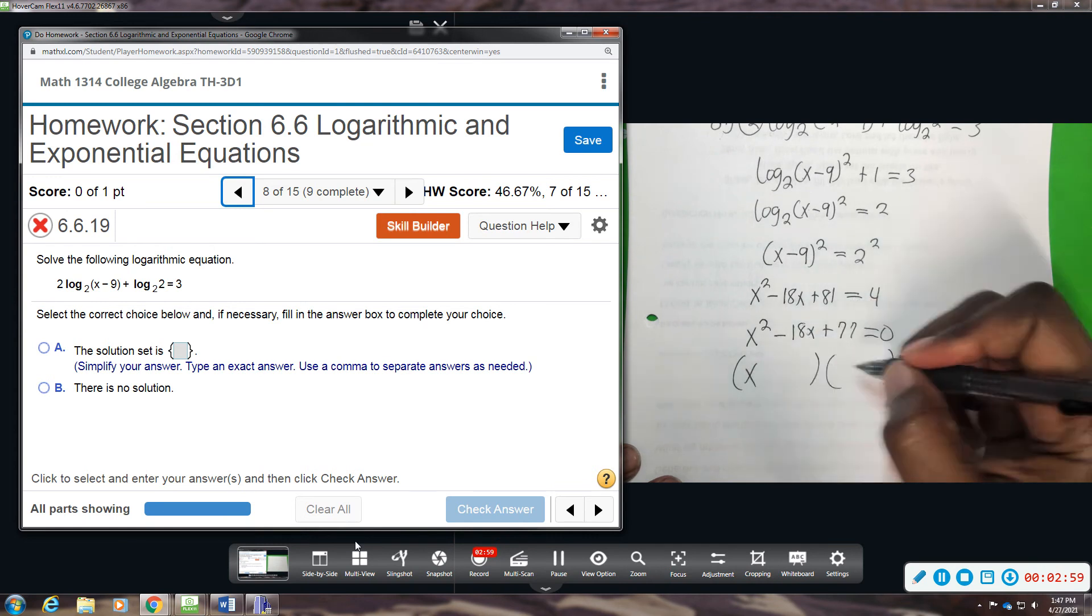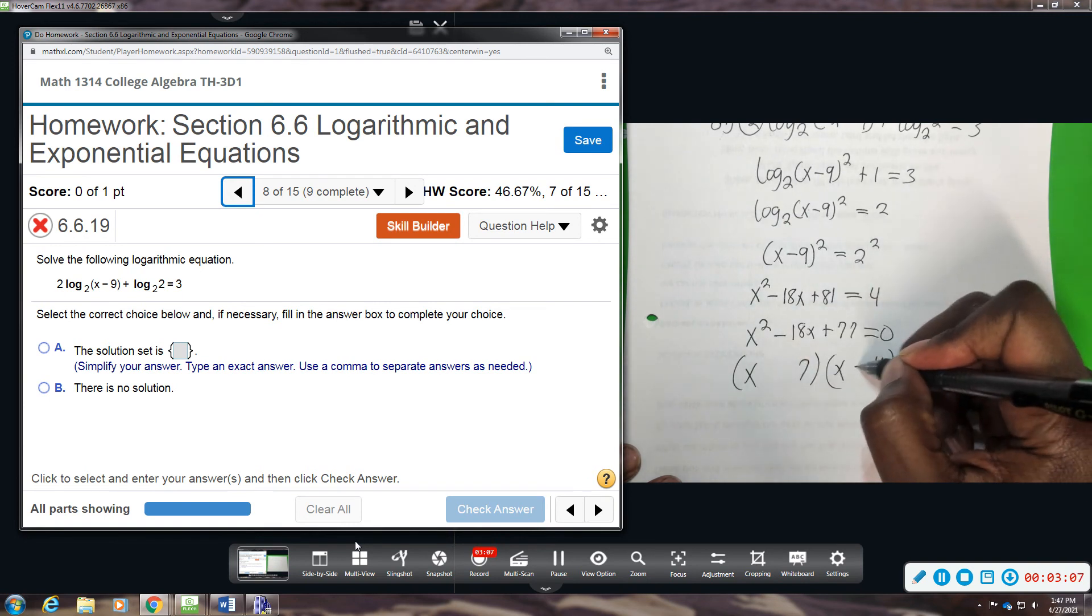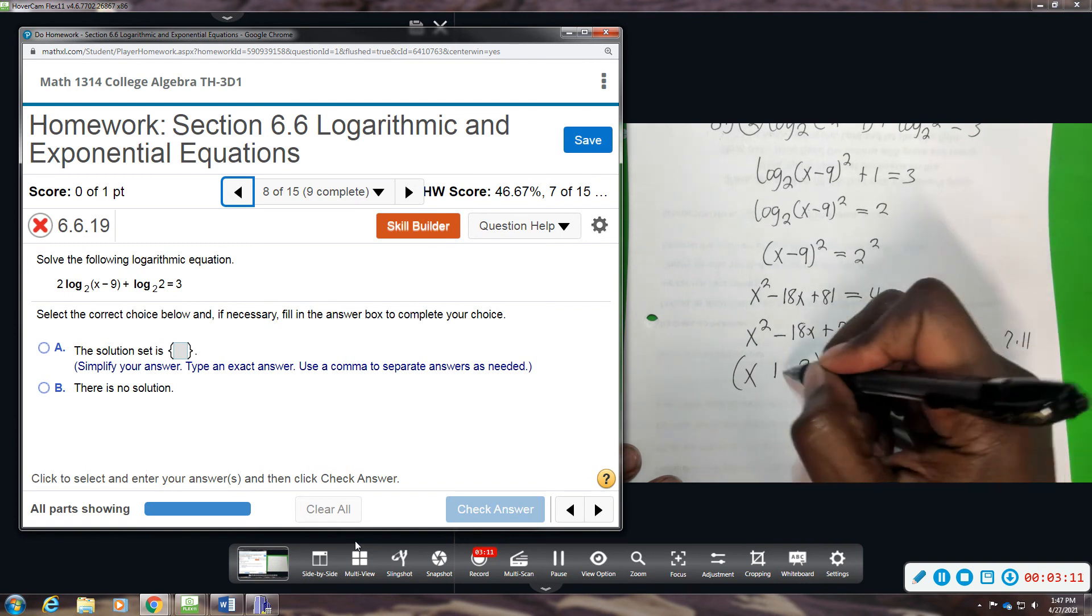All right, so we have x, x, 7, and 11. The bigger number will be negative. And this tells me they're both the same. So they're both going to be negatives.